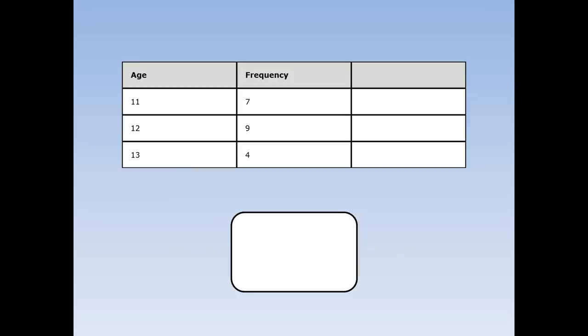Sometimes we have so many people that it's hard to put them all into a big long list, so instead we put them into a frequency table. Here we ask 20 people how old are you? 7 people said they were 11, 9 people said they were 12, and 4 people said they were 13.